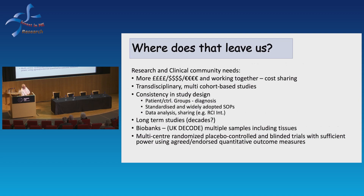We need consistency in study design — patients and controls, what groups we use, what the most appropriate control group is — and standardizing operating protocols. Simple things, but they make a huge difference in allowing you to compare results from one study to another. Data analysis is going to become a significant bottleneck because the highly sophisticated technologies we're using generate masses of data. We're going to need informaticians and systems biologists to help us integrate that, and it would be good to develop something accessible to all researchers.